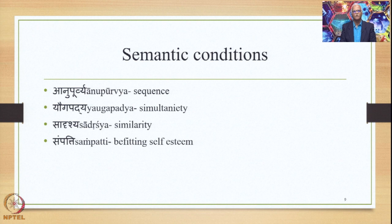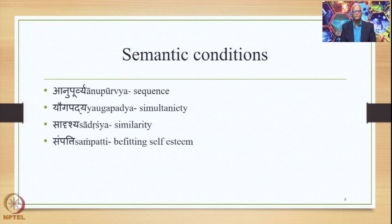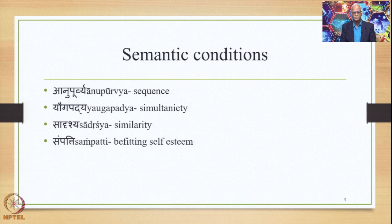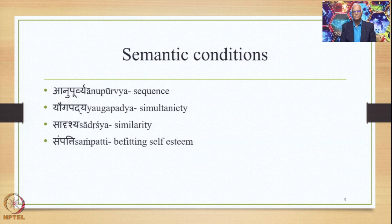As we said before, we have studied how the Avyaibhava Samasa takes place in the earlier stated semantic conditions, starting with Vibhakti, Samipa, Samruddhi, Vridhi, Arthabhava, Atyaya, etc. In this particular lecture, we shall study the four semantic conditions stated on this slide, namely Anupurvyya, Yaugapadyya, Sadrashya, and Sampatti.